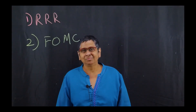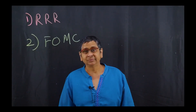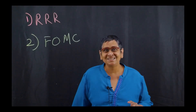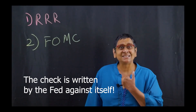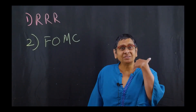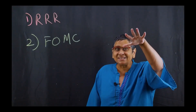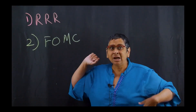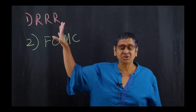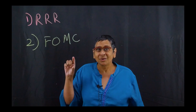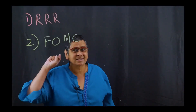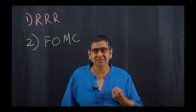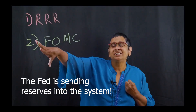But what happens when the Fed buys a treasury bill? It writes a check, same as I do — except the check is written by the Fed against itself. When whoever sold it deposits it and their bank goes to the Fed, the Fed credits the bank's account. That credit is reserves. So by buying treasury bills, the Fed is essentially sending reserves into the system.